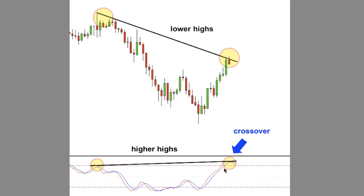That is just because of the way that the momentum works. We're using exponential moving averages with the MACD, and it is always a great setup. Now, the exact opposite is true — you can simply flip this whole picture around and expect a bullish divergence to take place.